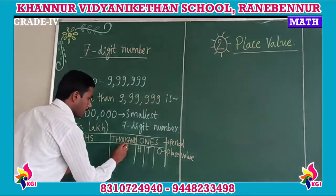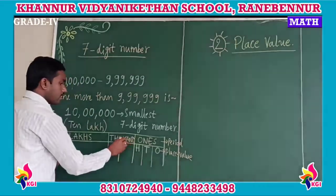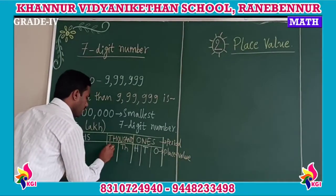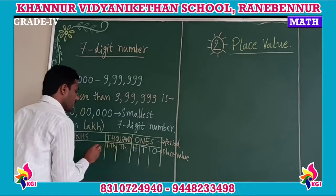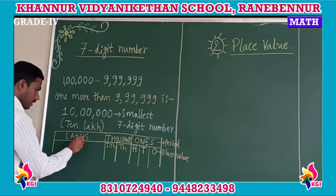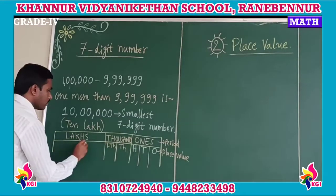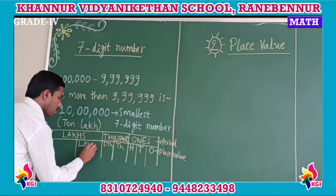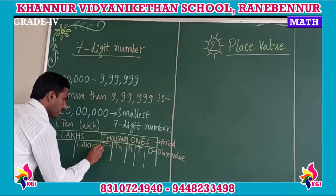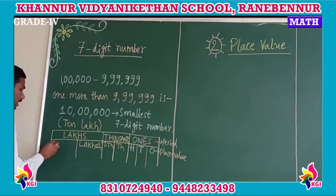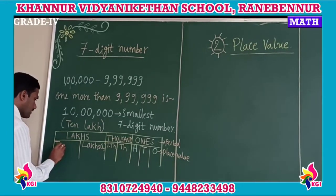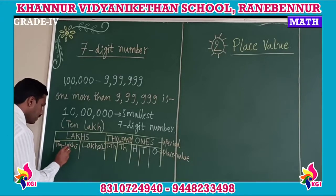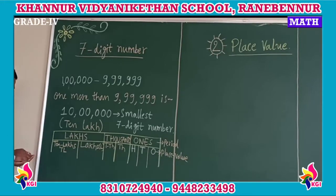In the thousands period I am dividing into two parts: thousands and ten thousands. Next, in the lakhs period I am dividing into two equal parts: the first place is lakhs place, written as capital L, and the second is ten lakhs, written as TL.